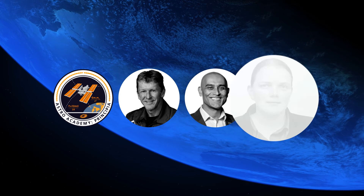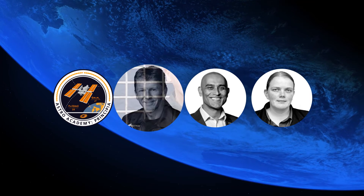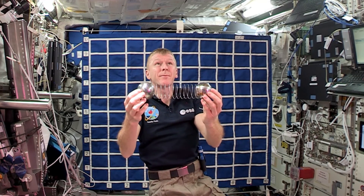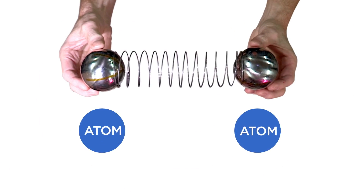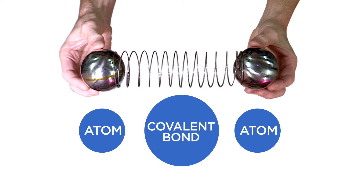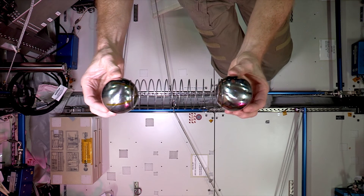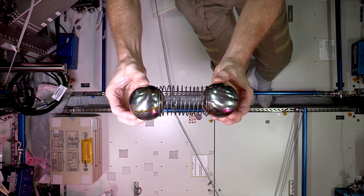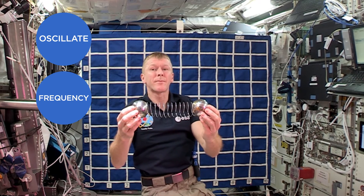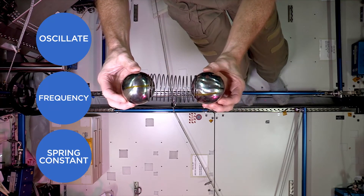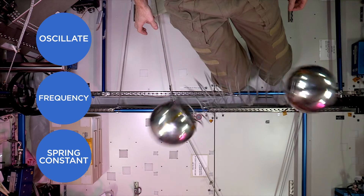But how does this relate to gases? In this demonstration, the two balls I'm holding represent the atoms in a gas molecule, and the spring represents the covalent chemical bond that binds the two atoms together. When I push the balls inward and release them, we can see that they oscillate in and out with a period, and therefore frequency, that depend on the masses of the balls and the spring constant, or stiffness of the spring.